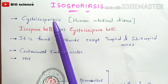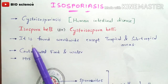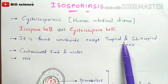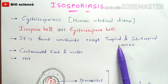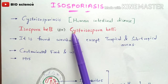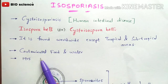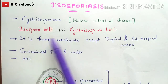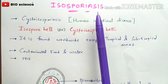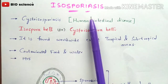This is the introduction to isosporiasis. It is found worldwide except in tropical and subtropical regions, and it can be passed from one person to another through contaminated food and water. The first recorded case of a person infected with isosporiasis was filed in 1915.